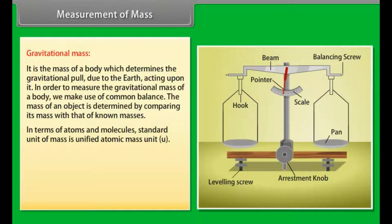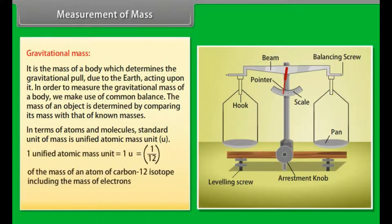In terms of atoms and molecules, the standard unit of mass is unified atomic mass unit, that is U. One unified atomic mass unit is equal to one U = 1/12 of the mass of an atom of carbon-12 isotope including the mass of electrons = 1.66 × 10^-27 kg.